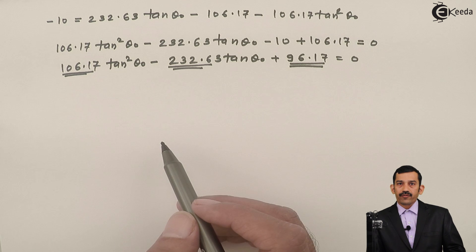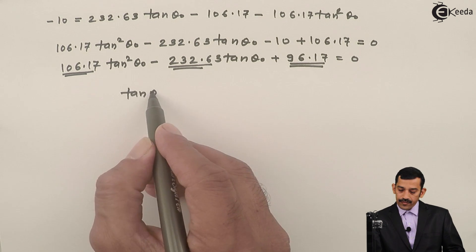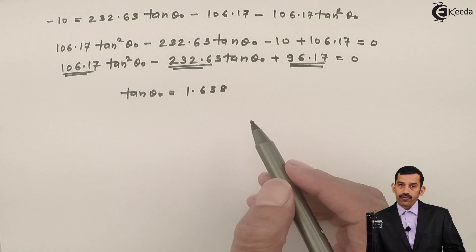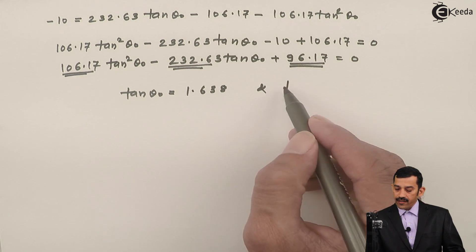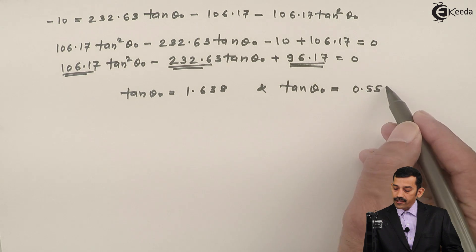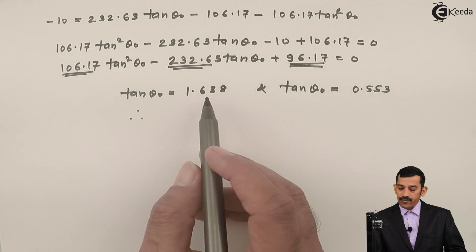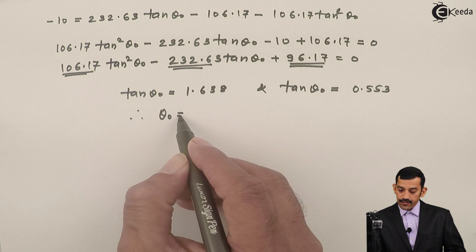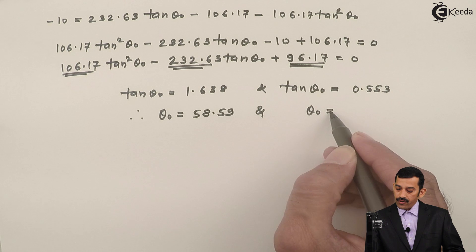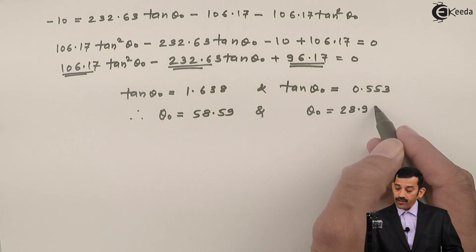Using the quadratic formula (or a calculator) with A = 106.17, B = −232.63, and C = 96.17, we get two roots for tan(θ₀): the first root is 1.638 and the second root is 0.553. Taking the inverse tangent of each: θ₀ = tan⁻¹(1.638) = 58.59°, and θ₀ = tan⁻¹(0.553) = 28.94°.